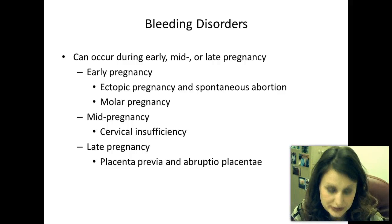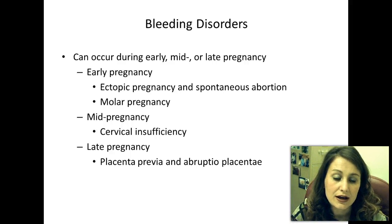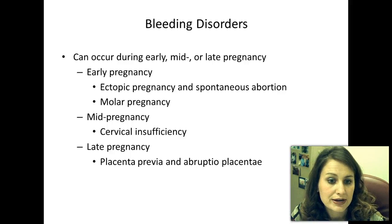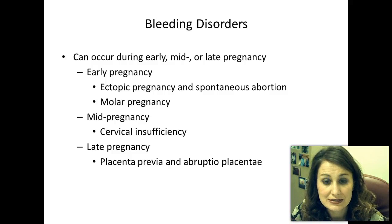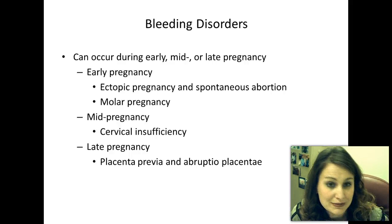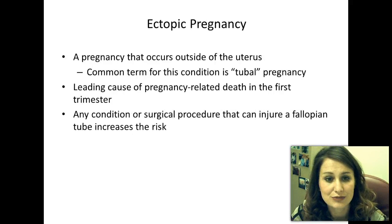Bleeding disorders can occur anytime during pregnancy. In early pregnancy, causes include ectopic pregnancy, spontaneous abortion, or molar pregnancy. Mid-pregnancy, it is often cervical insufficiency. Late pregnancy bleeding is usually due to placenta previa or abruptio placenta. We must be aware of signs and symptoms of bleeding and also consider hypovolemic shock.